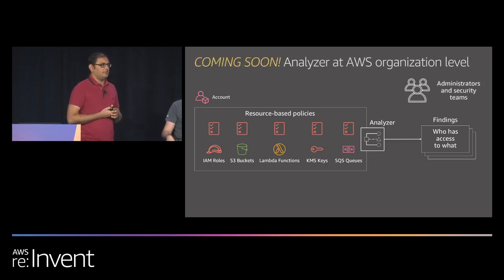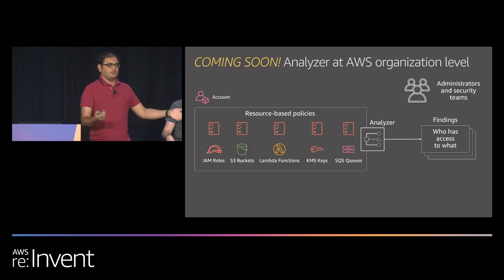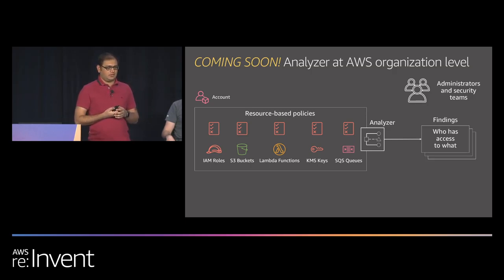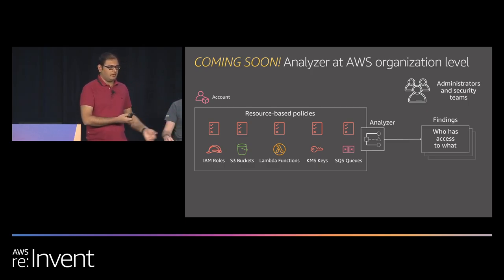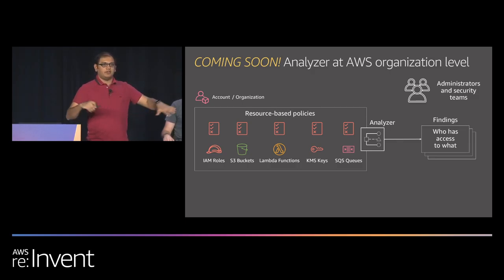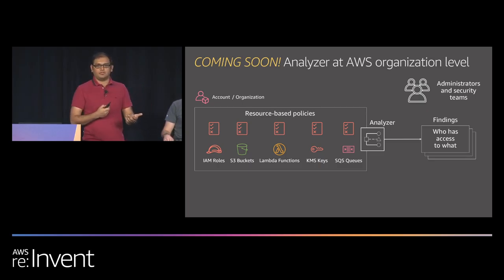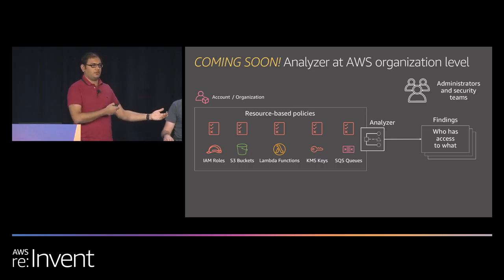A common piece of feedback we've heard is: great, I can do this at an account level, but I have thousands of accounts — what do I do? We've pre-announced an integration with AWS Organizations. You create an analyzer at an organization level, and it automatically looks at all resources in any account that is part of your organization that are shared outside your organization, and gives you those findings.